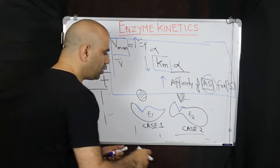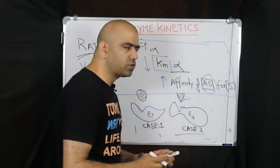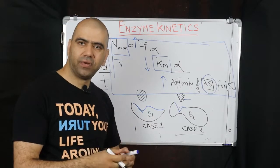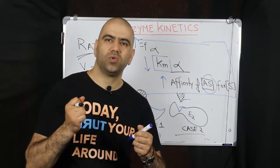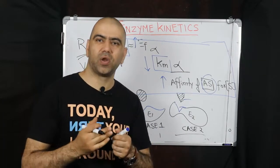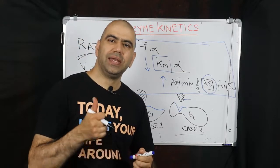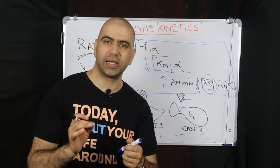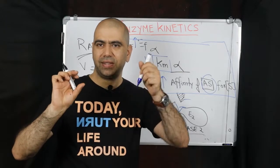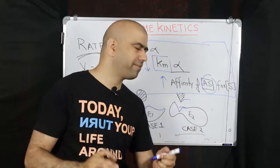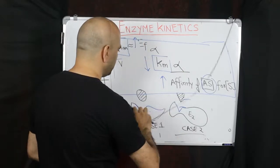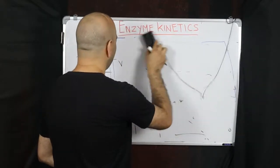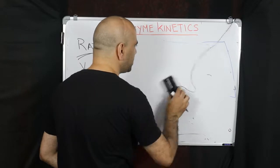So Vmax can increase only if enzyme concentration increases, and we can calculate values of Km and Vmax in a Michaelis-Menten hyperbolic equation. People then searched for another method where calculation becomes easier. The next plot that came in is called the Lineweaver-Burk, or double reciprocal plot. Let us see what it is, how we can find the Km and how we can find the Vmax in that graph.